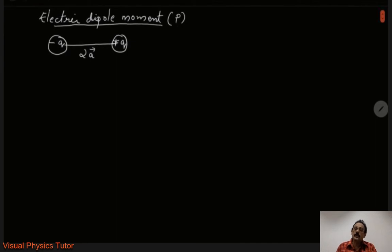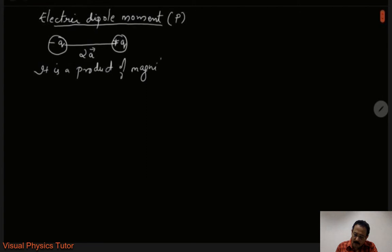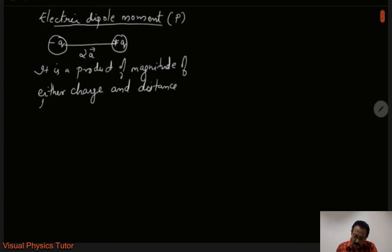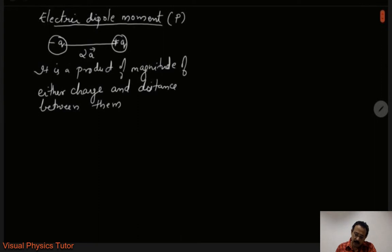So today, how do we define electric dipole moment? It is defined as the product of the magnitude of either charge and the distance between them. This statement can be expressed in mathematical form.